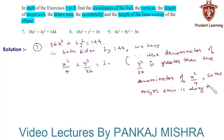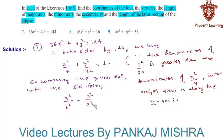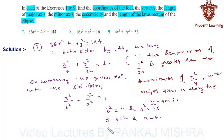So on comparing the given equation with the standard form of an ellipse whose major axis is along the y-axis, that is x²/b² + y²/a² = 1, here we see that b² = 4 and a² = 36. This implies that b = 2 and a = 6.